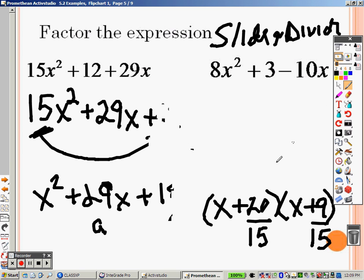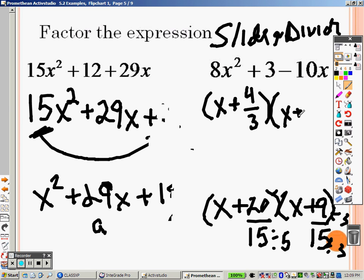So what can I take out of both of these? I can divide those both by a 5. So when I do so, that gives me x plus 4 over 3. Over here, I can take a 3 out of both the top and the bottom, which leaves me with x plus 3 over 5.